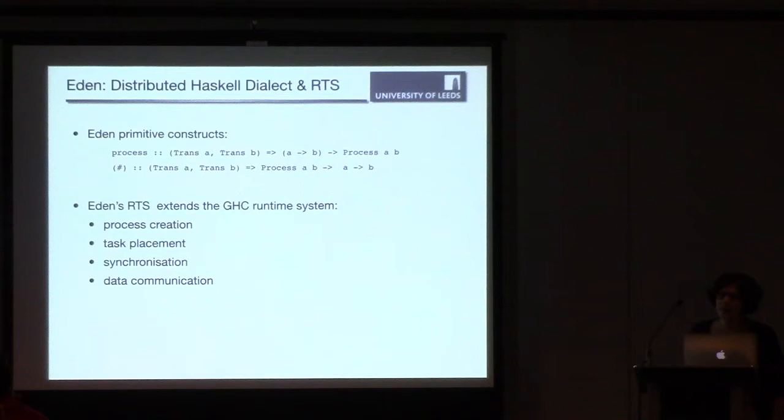So for our implementation, we used Eden. Eden is a dialect of Haskell that is tailored for distributed memory architectures. In a distributed system, we first need a way to create a parallel process. Eden provides two primitive constructs for this: process abstraction that lifts a function of type A to B to a process AB, and process instantiation operator that actually launches a process abstraction as a child process, probably on a remote node, creates all communication channels, sends the inputs, and retrieves the output when the results are ready.